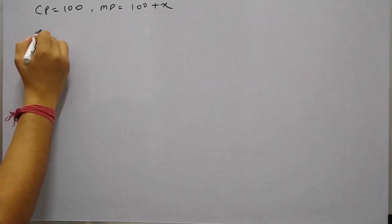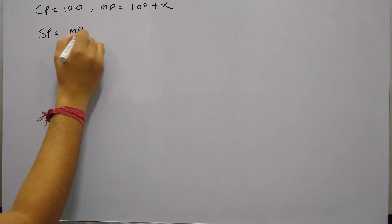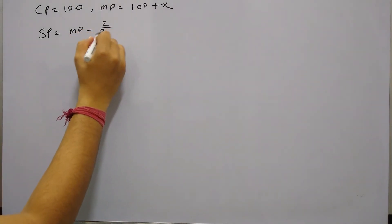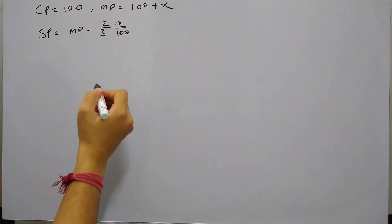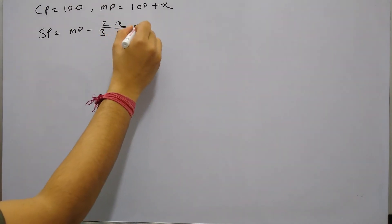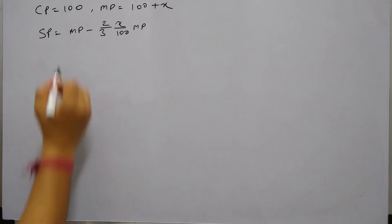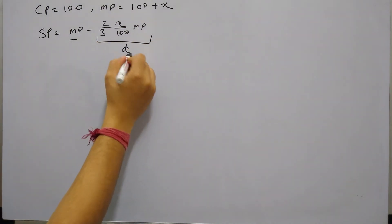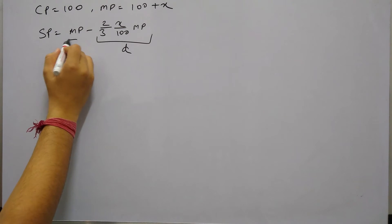If this being the case, then the selling price of this article will become marked price minus a discount is applied on the marked price. So a discount of 2/3 x% of marked price is applied. So MRP minus discount is the selling price.